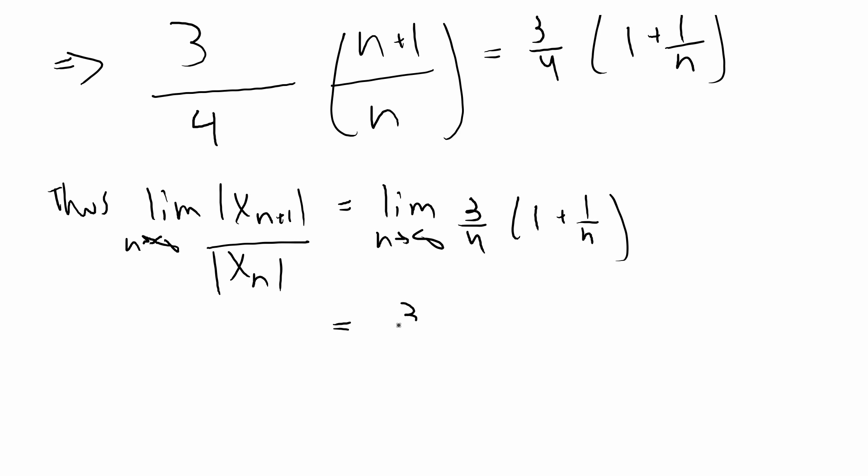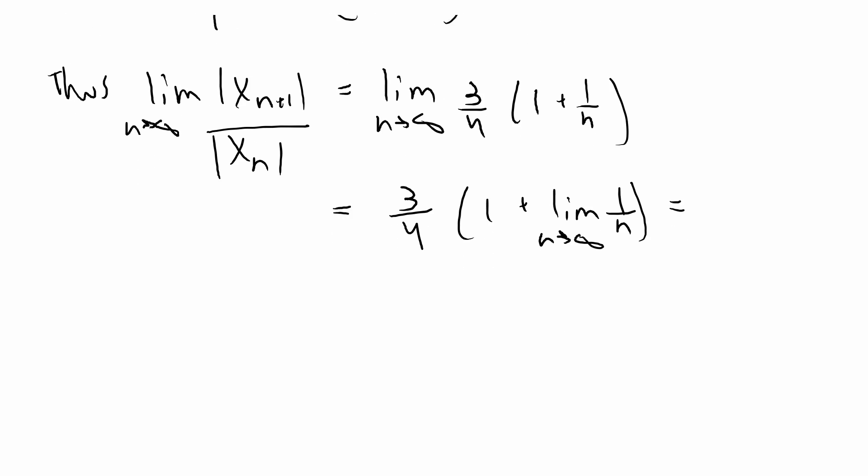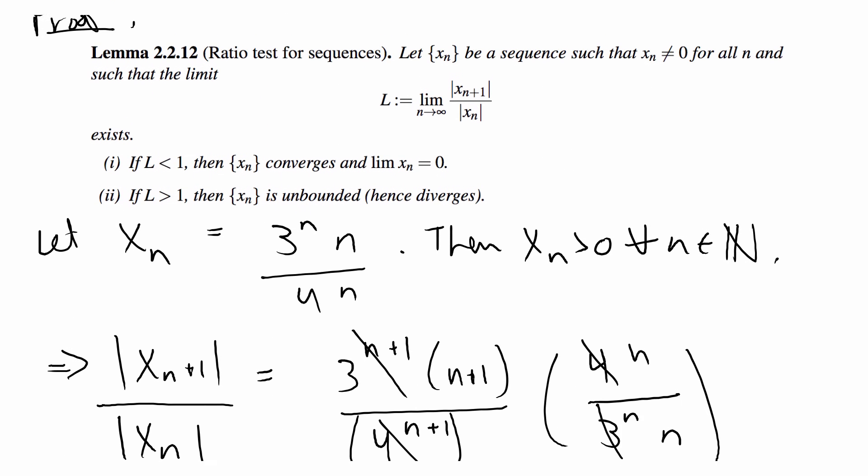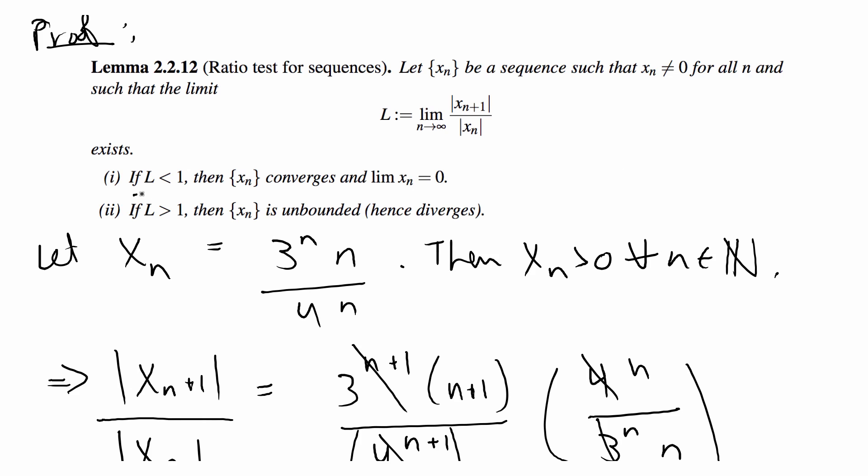There's a theorem that says that we can distribute this, so we're going to do 1 plus the limit of 1/n because the limit of a constant is obviously just the constant, and we know that the limit of 1/n is 0. So we have that this is equal to 3/4 times (1 + 0) which is equal to just 3/4. And by the ratio test for sequences, that means that 3/4 is less than 1 and thus the sequence converges and the limit of the sequence is equal to 0.